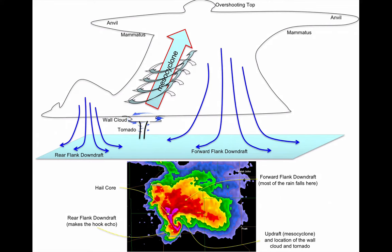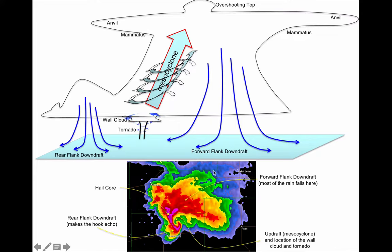Here's my PowerPoint drawing of a supercell outline. We're going to learn about three main components: the main updraft, which creates the overshooting top, the anvil, and the mammatus clouds. We'll then talk about the forward flank downdraft and the rear flank downdraft — the two big downdrafts. And finally, we'll talk about the formation of the wall cloud and the tornado. On radar, the supercell almost always has a rear flank downdraft where the hook echo exists, an updraft inside the hook where the tornado exists, a hail core with reflectivity over 60 dBZ, and a big forward flank.